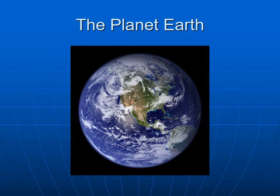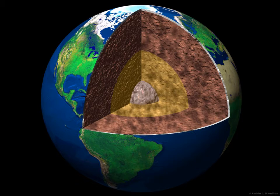Talking about Earth and the interior structure of the Earth, we discussed the different layers. We have the crust — that's the outermost part, the part that we wander around on. We have the mid-layer, which is the mantle, made of heavier kind of rock. Then we have the core, and the core has two parts: an inner core and an outer core.